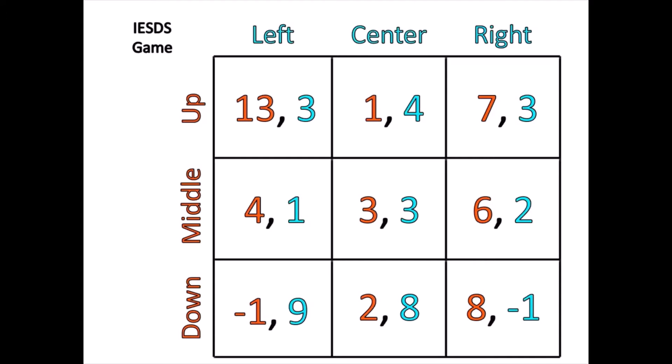Instead of looking at player 1, let's look at player 2's strategies. Would player 2 ever want to play right? The answer is no, because center strictly dominates right. Right is always worse for player 2 than center because center always produces a greater payoff for her. This 4 is greater than this 3 if player 1 goes up. If player 1 goes middle, 3 is greater than 2. And if player 1 goes down, 8 is greater than negative 1. So regardless of what player 1 does, player 2 should never want to play right.